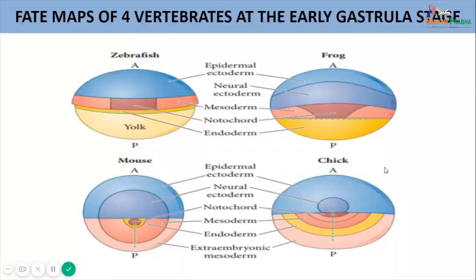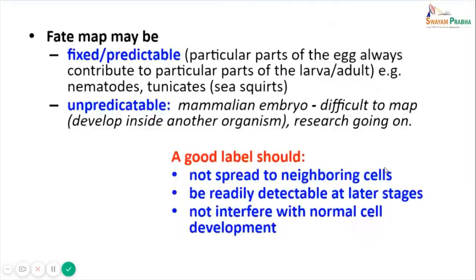The fate map may be fixed or predictable in nature, in which particular parts of the egg always contribute to particular parts of the larva or adult, as seen in nematodes or tunicates. However, the fate map may be quite unpredictable in mammalian embryos, which are developing inside another organism, though research is ongoing to prepare these fate maps as well.